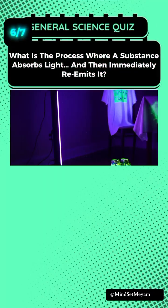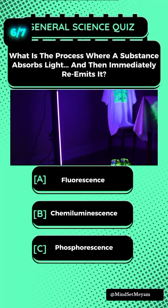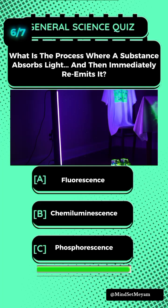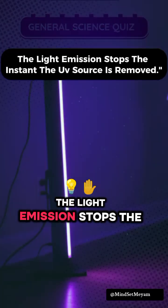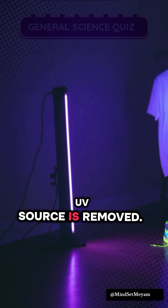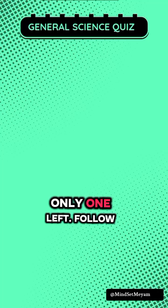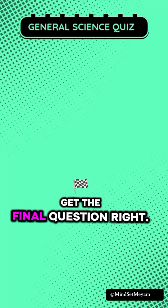Question 6: What is the process where a substance absorbs light and then immediately re-emits it? A: Fluorescence. The light emission stops the instant the UV source is removed. Only one left — follow if you dare to get the final question right.